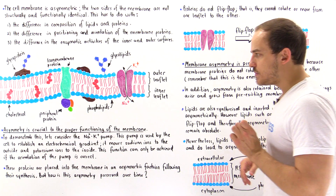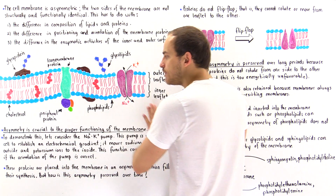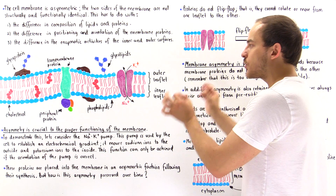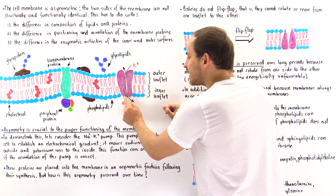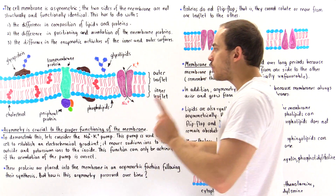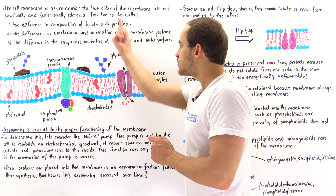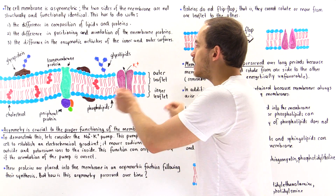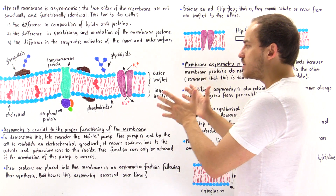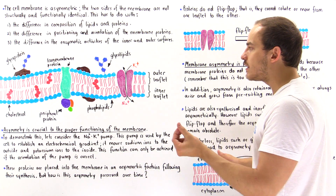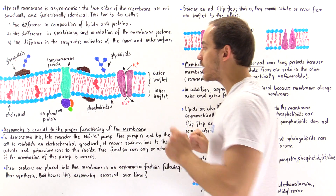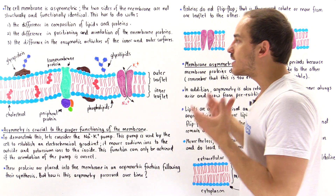Because it uses ATP molecules, which are only found in the cytoplasm, this protein has to be positioned in the proper orientation so that the correct side can actually interact with the ATP molecule. It also has to be positioned properly because we want to move sodium outward and potassium inward, not in the opposite direction. The proper positioning of this protein within the membrane determines its functionality, allowing the cell to pump ions in the proper directionality to establish that electrochemical gradient.